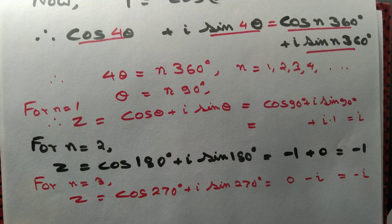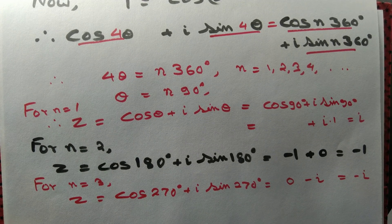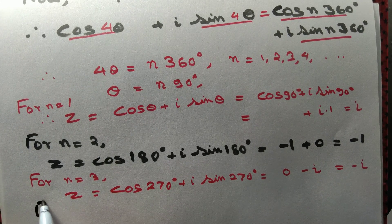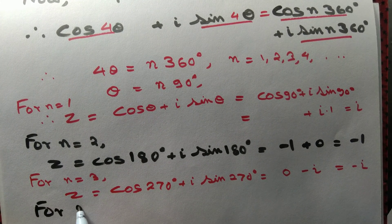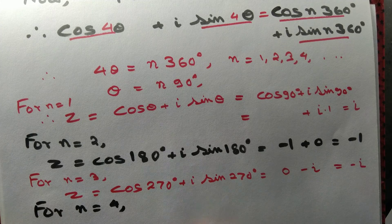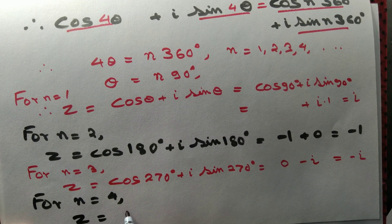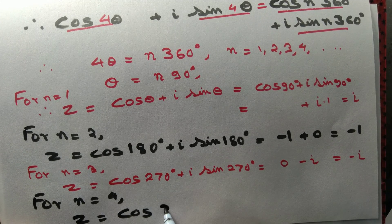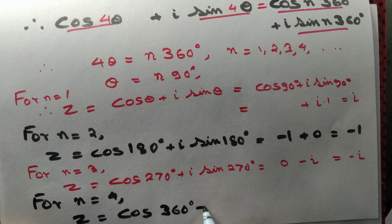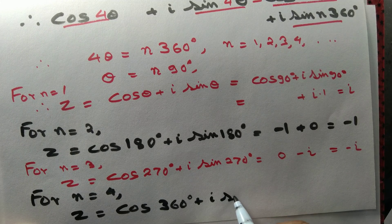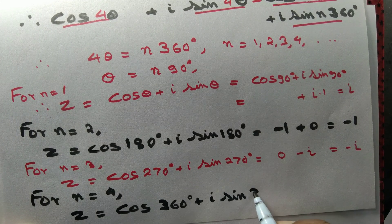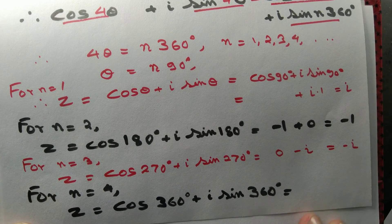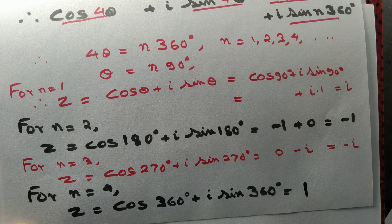Lastly, for n equal to 4: z equals cos(4 × 90°) + i sin(4 × 90°), that is cos360° + i sin360°. That gives us simply z equals 1.